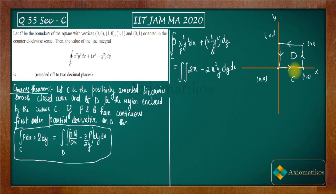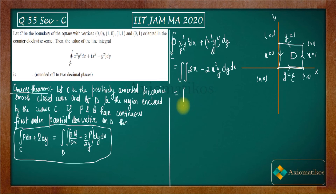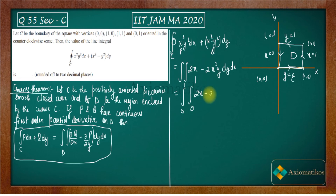Now, the equation of the line on the x-axis is y = 0, the top is y = 1, the right side is x = 1, and the left is x = 0. So y moves from 0 to 1 and x moves from 0 to 1. Therefore the double integral becomes the integral from 0 to 1 (in x) of the integral from 0 to 1 (in y) of (2x − 2x²y) dy dx.